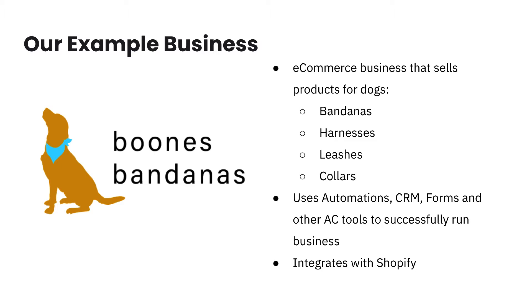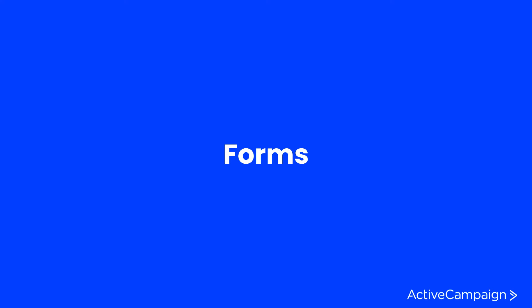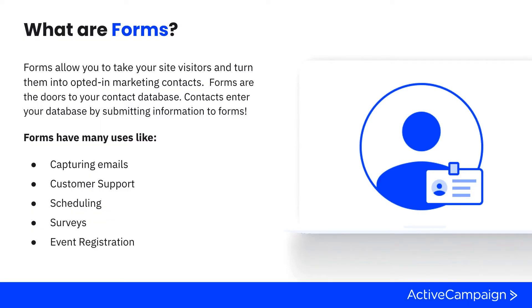We'll use some examples of forms that Boone's Bandanas has created as we talk about forms today. Forms are something that you can embed onto your website in order to capture a site visitor's information and turn them into an opted-in contact within ActiveCampaign who lives on a list. Once you capture that information, you can put them through automations, send them campaigns, and put them through your CRM.